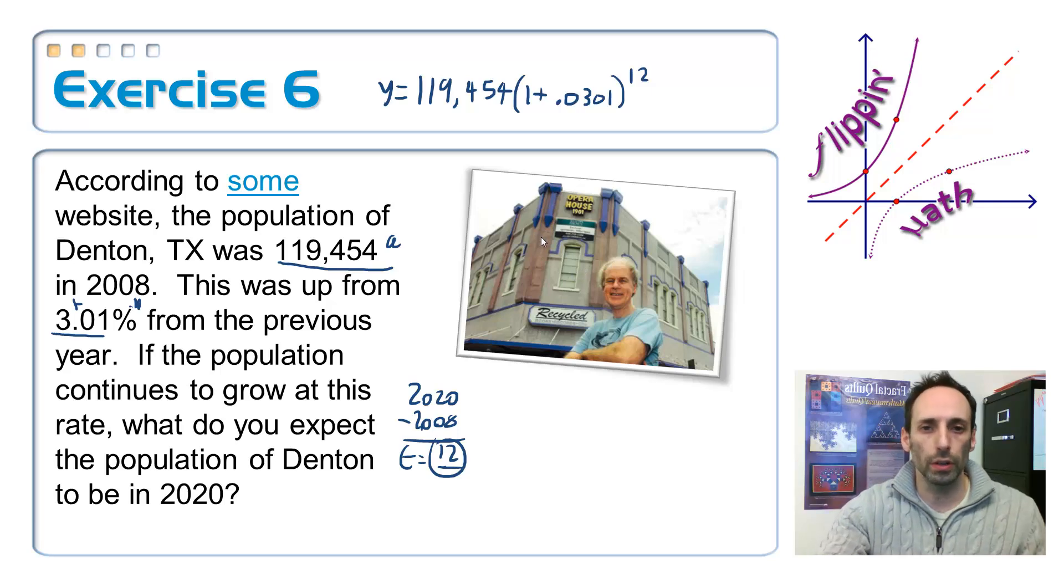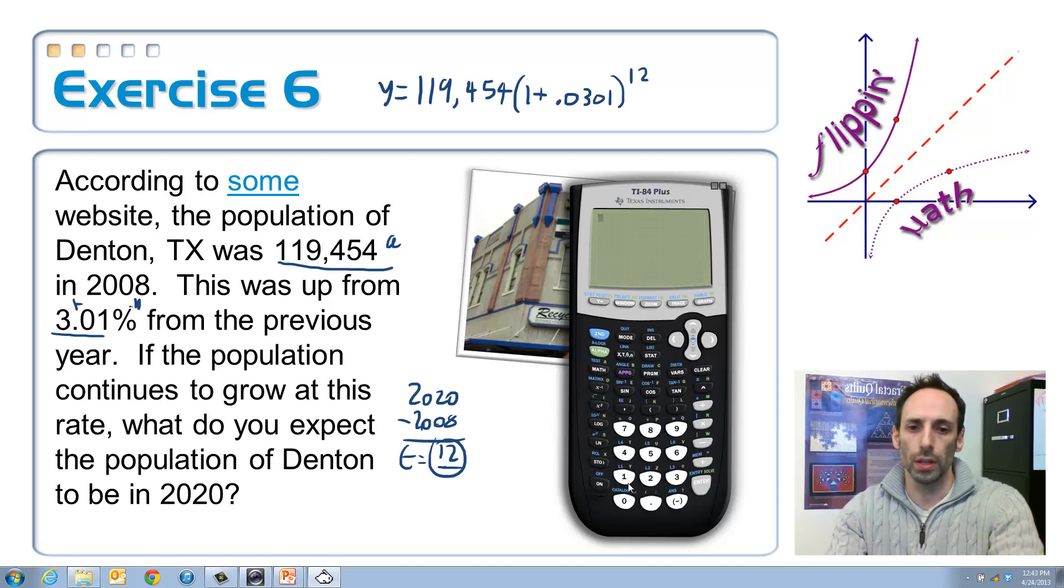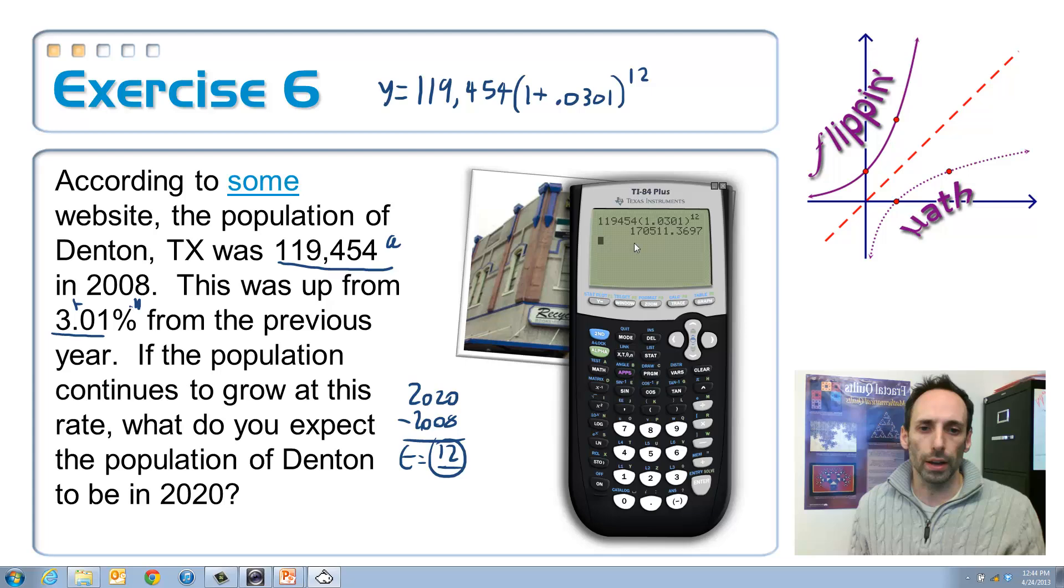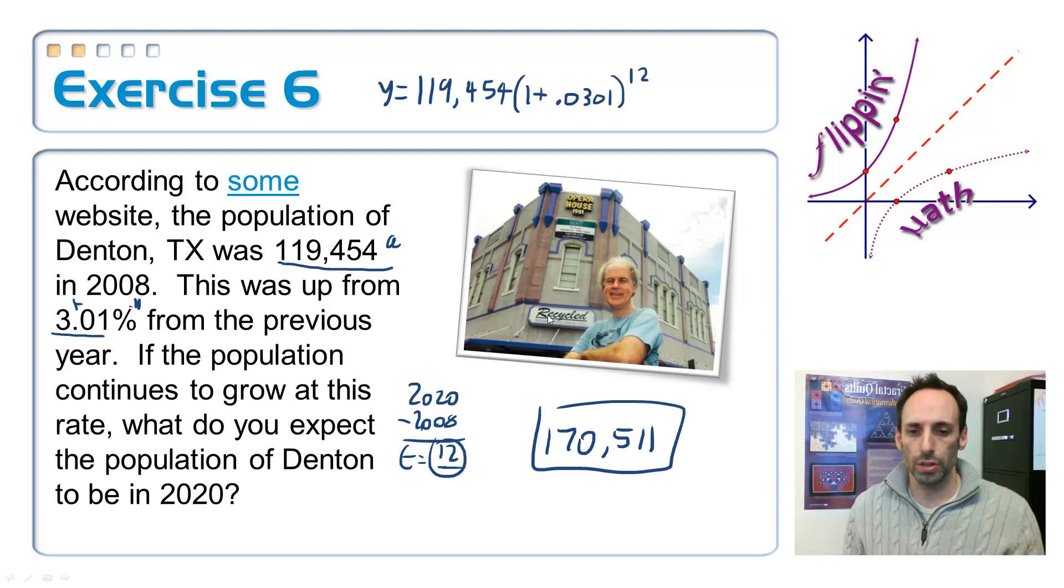Let me just call up the calculator here because, of course, I'm not going to be doing that by hand. Turn that thing on, and let's get to calculating. Just type it in as you see it, 119,454. I'm going to go ahead and put this in parentheses. You don't need the parentheses here if you go ahead and add the numbers up. Like, for example, if you just went 1.0301, you wouldn't need the parentheses. Close them now, since I did put them, exponent, and then type in your exponent of 12. So here we are. We are projected at 170,000, about 511. Sure, there's a fractional amount of a person. Ouch, to be that guy. So 170,511.